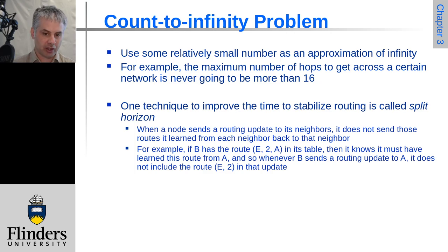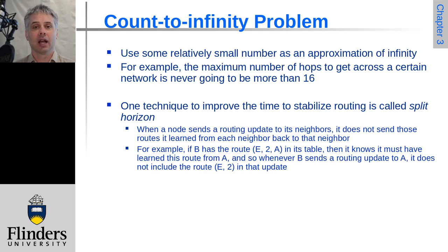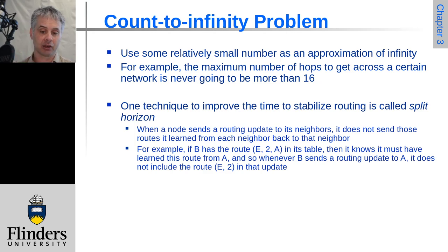That then limits the amount of time that traffic is being sent around in circles, not able to be delivered — because this is the problem: when the routing table is wrong, traffic will be going around in circles trying to get there, rather than nodes realizing that there is no longer a path at all to get to a particular node.